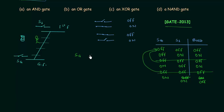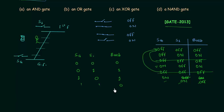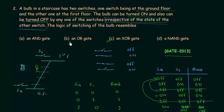So the final truth table looks like this: (0,0,0), (0,1,1), (1,0,1), (1,1,0). You can clearly see this is the truth table of an XOR gate. So option C is the correct option — the logic of the switching resembles an XOR gate. That's all for this lecture.